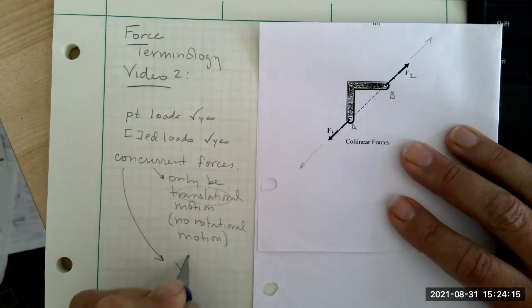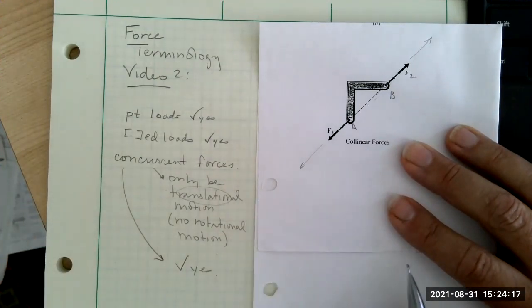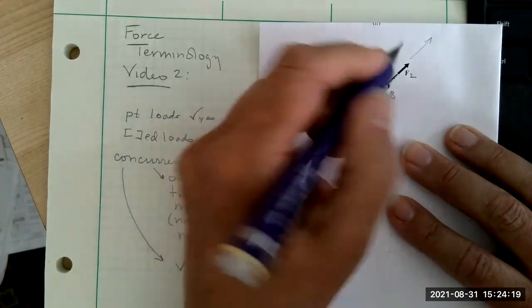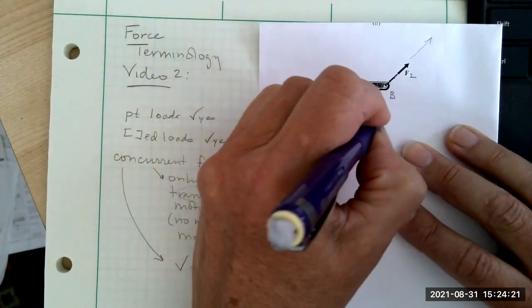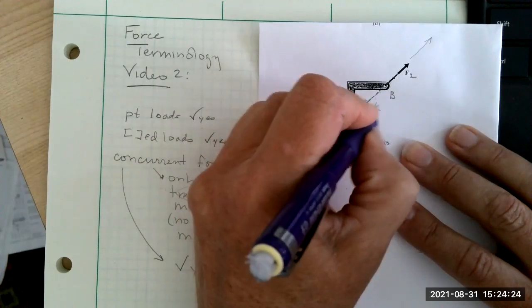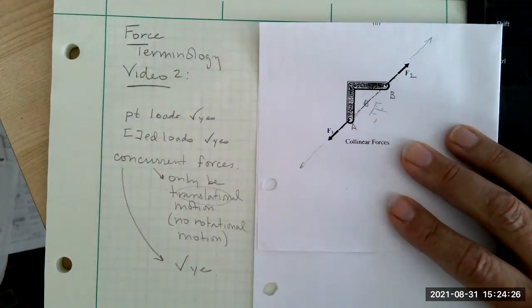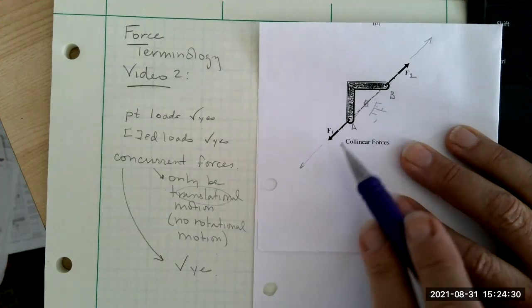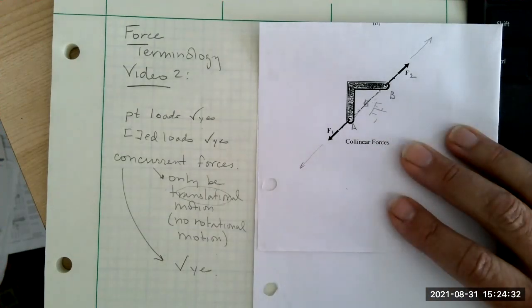Well, that's the same thing with this. Yes, these two are concurrent forces. Because you could move F1 up to here, or you could move F2 down to here. The net effect on this system is that it's going to be pulled down, and it's only going to be translational motion.